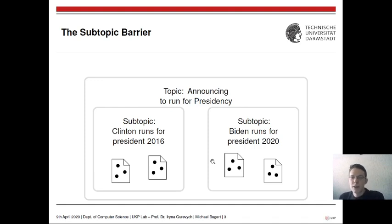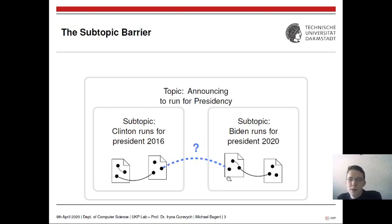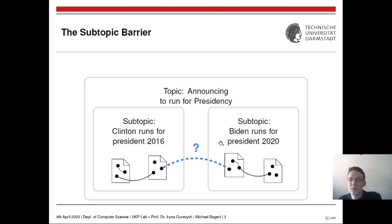Inside these documents we find event mentions, and we can have several types of coreference links: within-document, cross-document, and what we call cross-subtopic event coreference links. This last type is particularly useful for downstream tasks. For example, if an event influenced both Biden and Clinton running for president — maybe Clinton's email affair — it would be very useful to tell downstream tasks about this connection between documents.